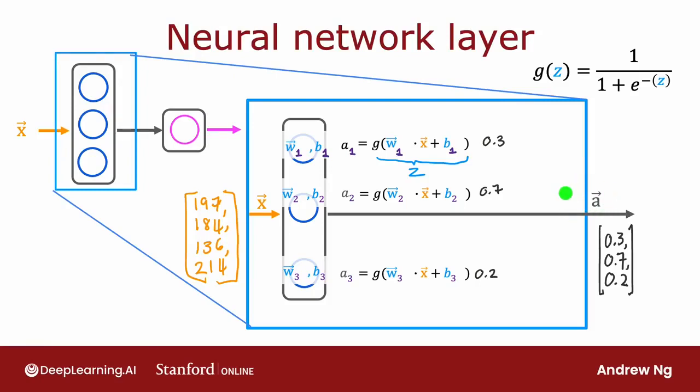This vector is then passed to the final output layer of this neural network. When you build neural networks with multiple layers, it's useful to give the layers different numbers. By convention, this layer is called layer one of the neural network, this layer is called layer two, and the input layer is also sometimes called layer zero.